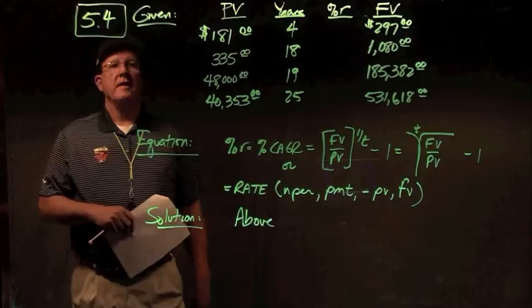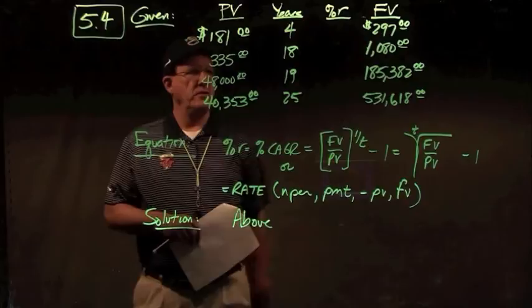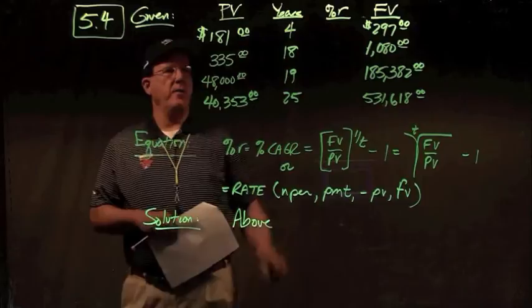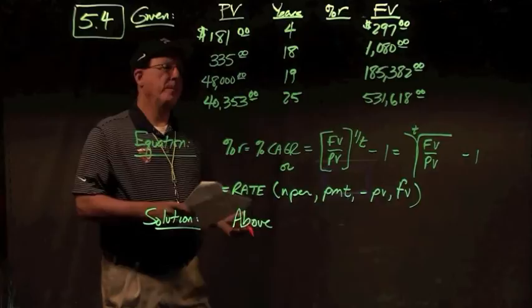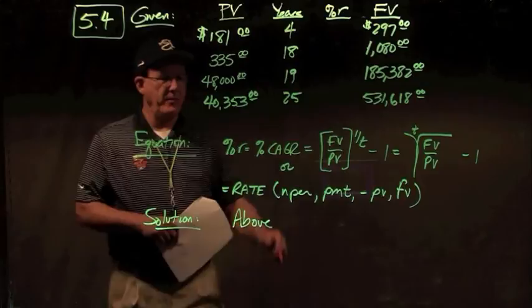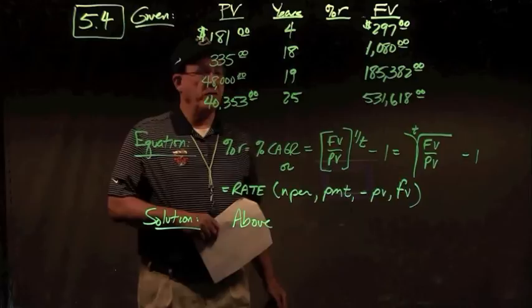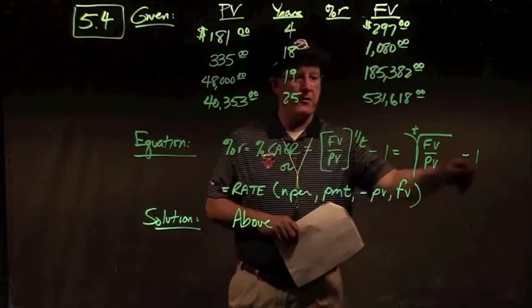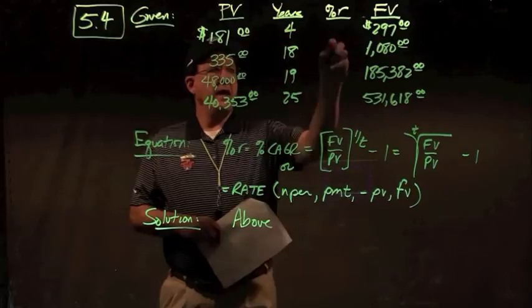In problem 5.4, we're given present values, number of years, and future values, and we're asked to find the rate of interest. We're solving for R — what rate must I grow $181 for four years to end up with $297? The equation is: percent R (compound annual growth rate) equals (Future Value divided by Present Value) to the 1/t power, minus 1 — or equivalently, the t-th root of FV over PV, minus 1.